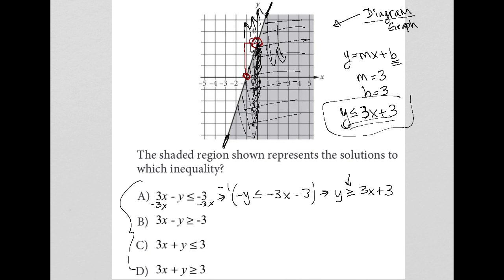And I get positive y is greater than or equal to 3x plus 3, which looks pretty good except for the greater than or equal to. So anytime you multiply an inequality by negative, whether multiply by negative or divide by negative, your inequality symbol must flip.